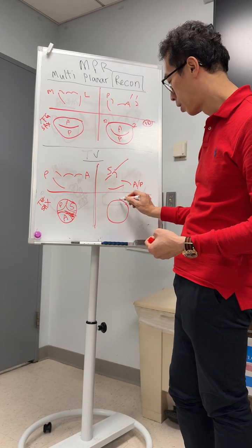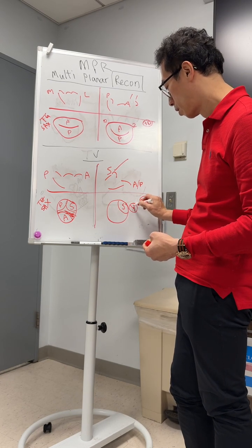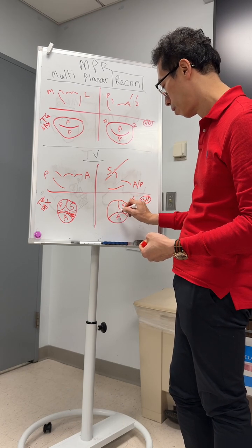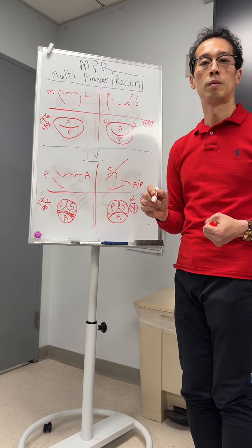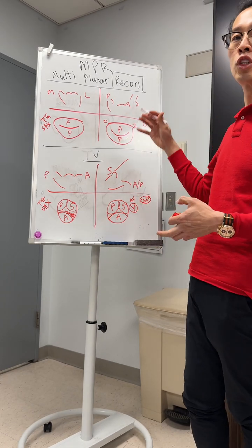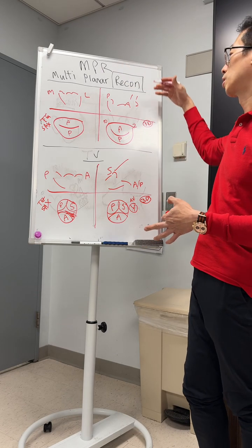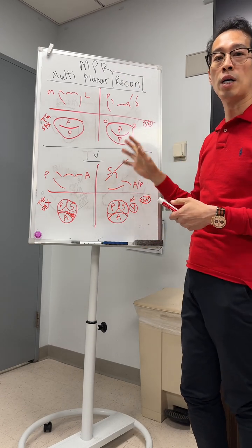And then same thing here. So the aortic valve it will be here. So whichever machine you use, it's the same principle. So this is now kind of the master layout that I want to show you to be able to understand the principle of it.